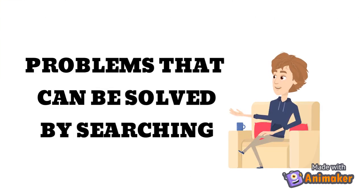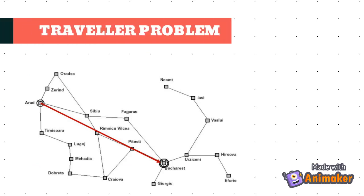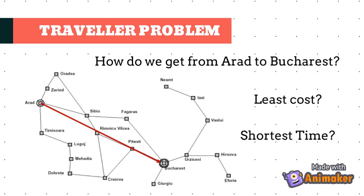So what are the problems that can be solved by searching? The first problem is the traveler problem. How do we get from Iran to Bucharest, and with the least cost or shortest time? This is one of the most common problems in AI.